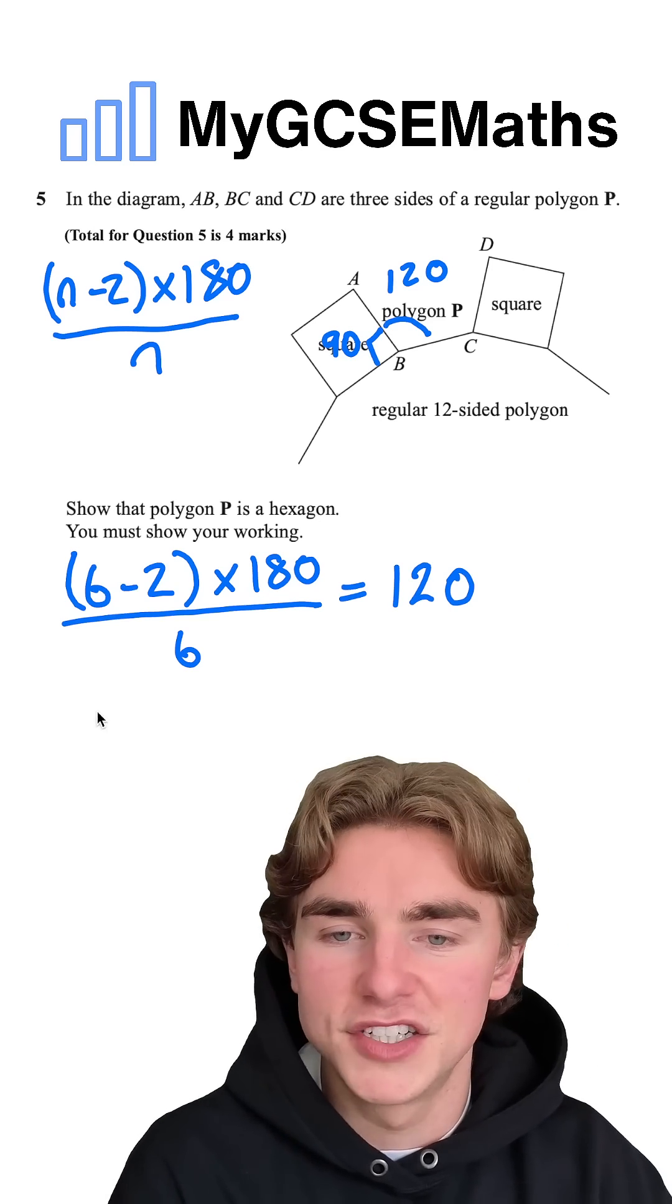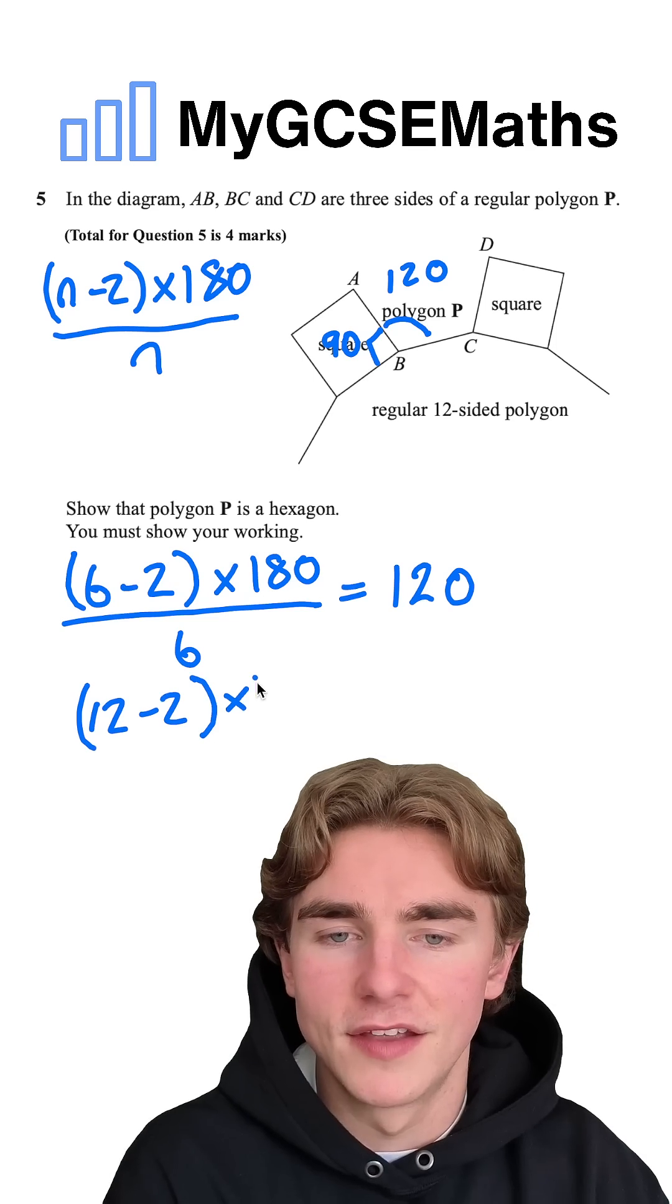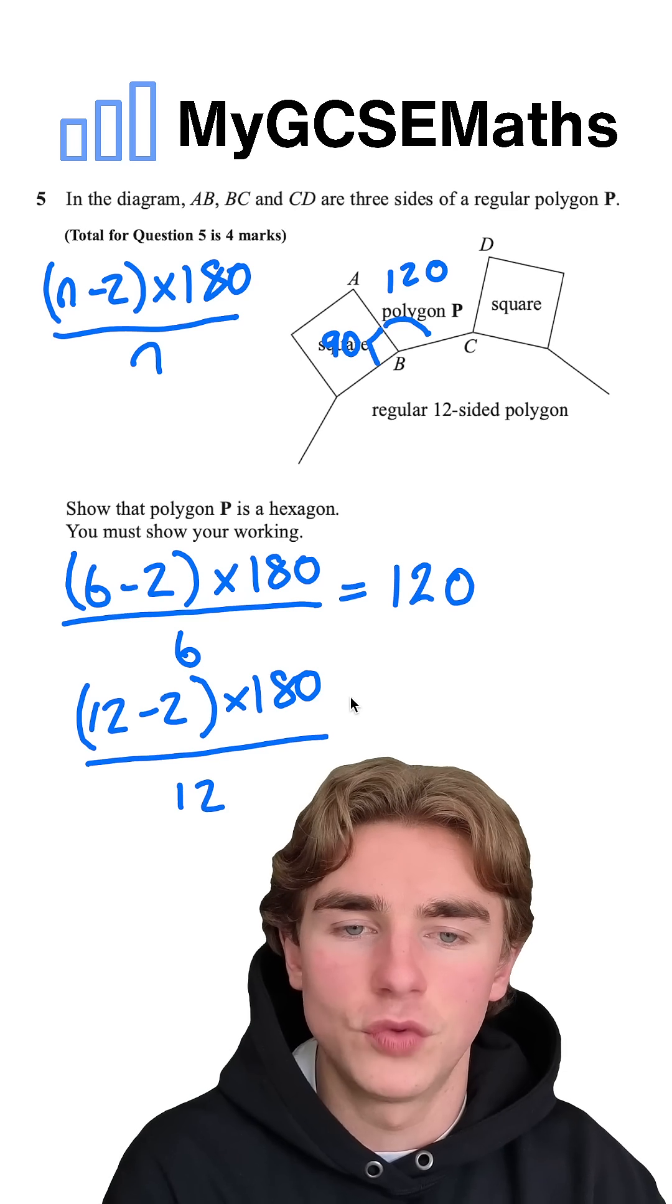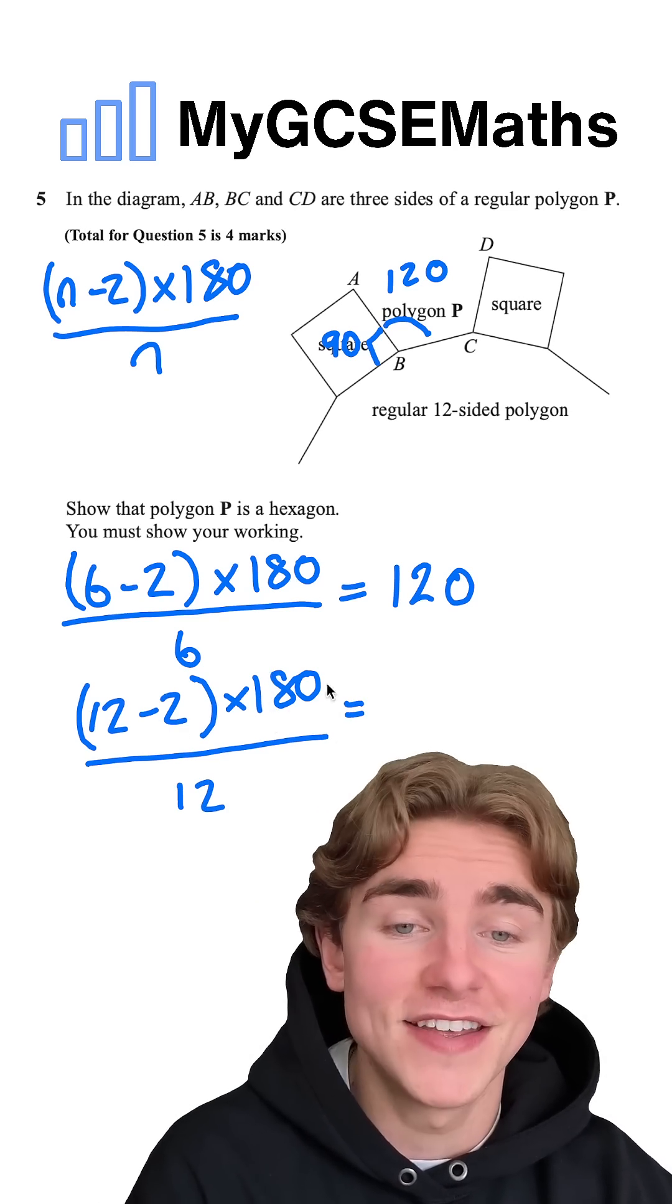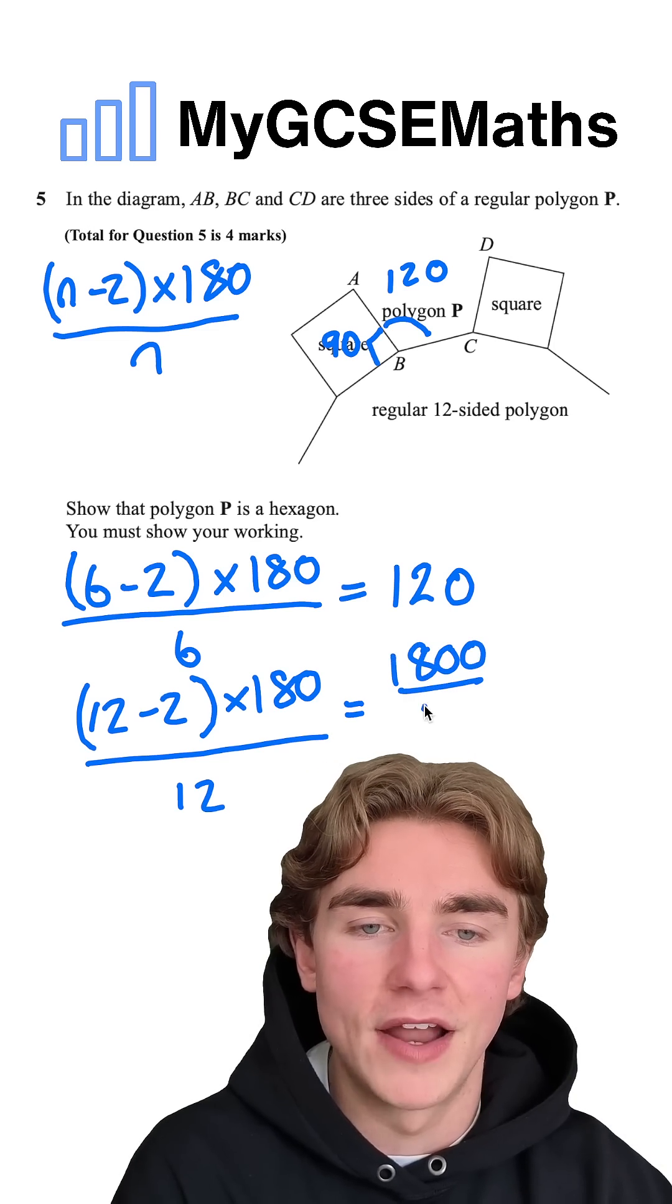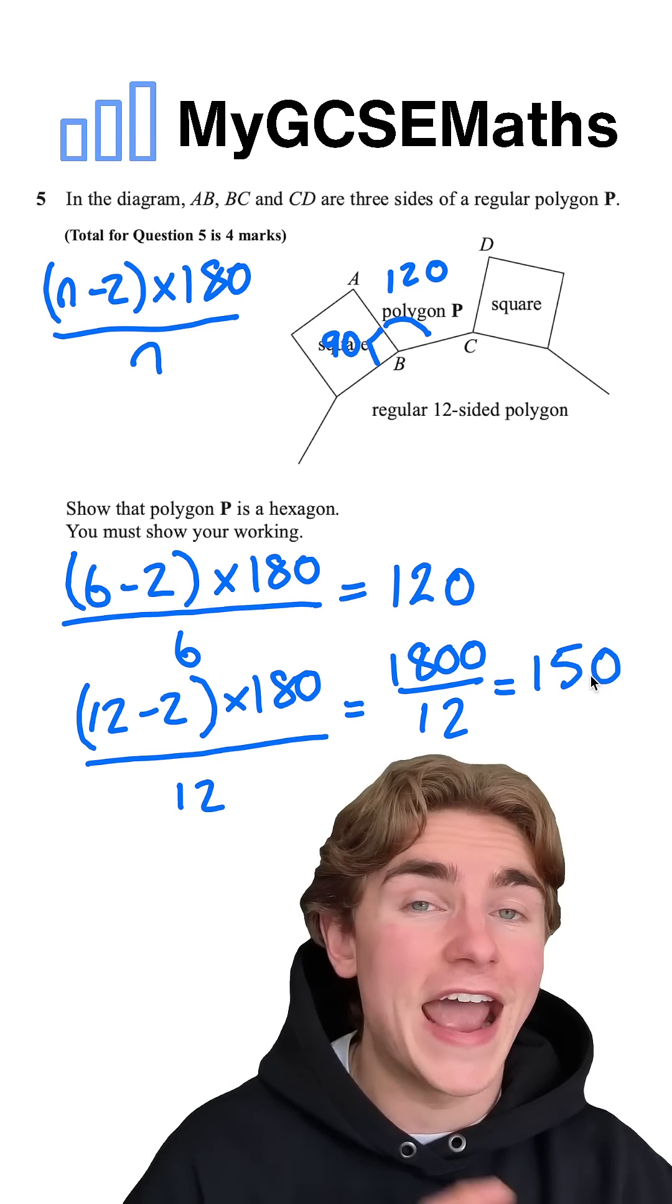For our 12-sided shape, we're going to do 12 subtract two times by 180 divided by the number of sides, which is 12. Twelve minus two is 10, times by 180 is 1800, so we have 1800 divided by 12. 1800 divided by 12 is going to be 150. Absolutely use your calculator for that.